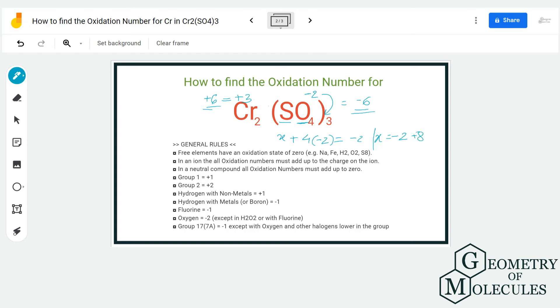Which means X - 8 = -2. We're going to take the numbers over, so X = 6. The oxidation number of sulfur is 6 for this compound.